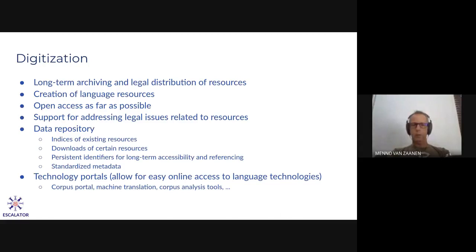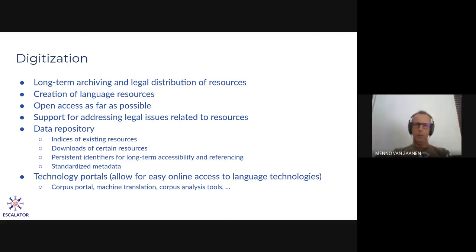There are also some other advantages. These resources get a persistent identifier, so you can always refer to the specific resource you're using in your research. The description of what is in the resource is also standardised. Next to our data repository, we have a few technology portals — a Corpus portal, machine translation systems — and several tools available that make it easy to start working and analysing different texts.